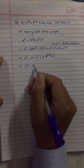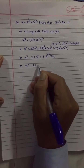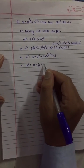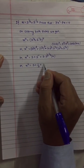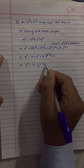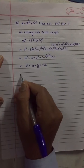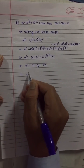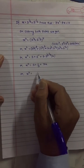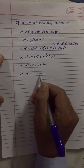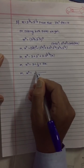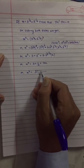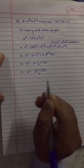Then we can write x cubed is equal to 3 plus 1 by 3 plus 3 times x. Now take the LCM — 3 will be the LCM. So that gives 9 plus 1 over 3 plus 3x, which is 10 over 3 plus 9x.